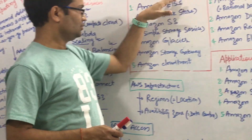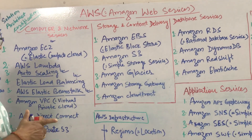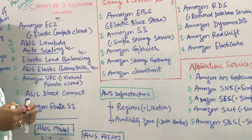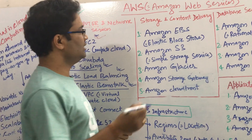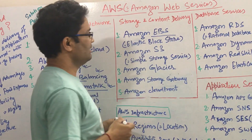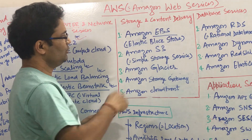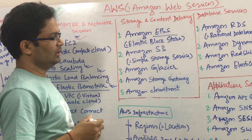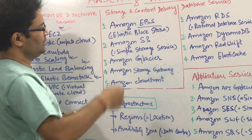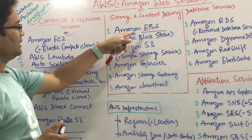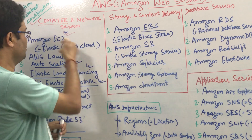Coming to the storage part — storage and content delivery. When you create an EC2, it comes with its own internal storage. If you want to add more storage, you can do that with EBS — Elastic Block Store. You create it separately, then connect this EBS to the EC2. Inside the availability zone it is automatically replicated, and even if the system is down, your data will still be there. This is the additional storage you can provide to EC2.